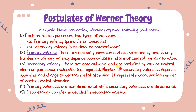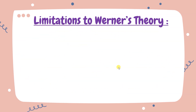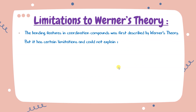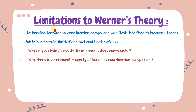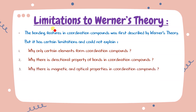The geometry of a complex is decided by secondary valencies only. Primary valencies decide only the oxidation number, while secondary valencies give both geometry and coordination number. Limitations of Werner's theory: it could not explain why only certain elements form coordination compounds, why bonds in coordination compounds have directional properties, and why coordination compounds show magnetic and optical properties.